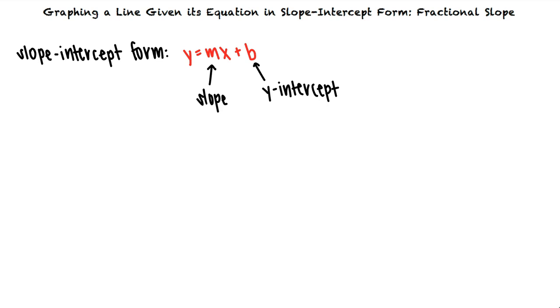If we look at the example y equals negative one-half x plus 4, we see that this line has a slope of negative one-half and a y-intercept of 4.